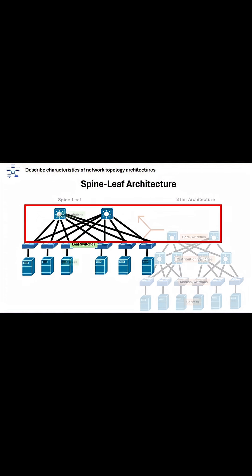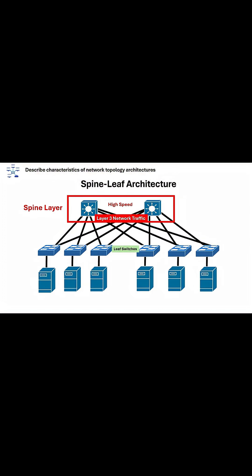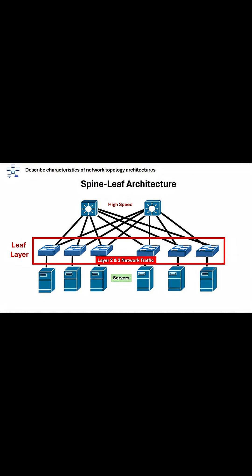The spine layer is made up of high-speed routers or switches that connect all the leaf devices together. These devices are responsible for providing high-speed connectivity between the different parts of the network, and they act as a primary point of interconnection. The leaf layer is made up of access switches that connect end-users or servers to the network.